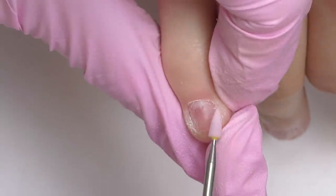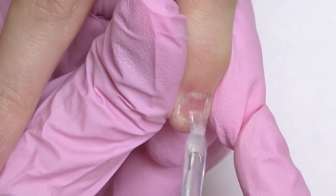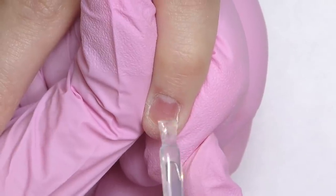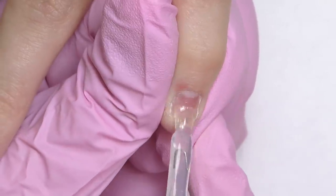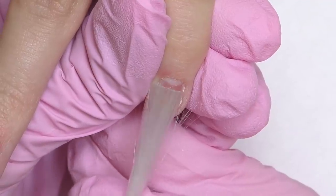After that I filed off the surface shine, apply dehydrator and primer and next step is applying base coat. This is soak off base coat by Kupa, but I applied only on the free edge, not on the whole nail and in the moment you will see why.